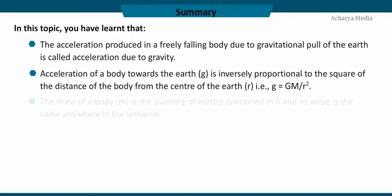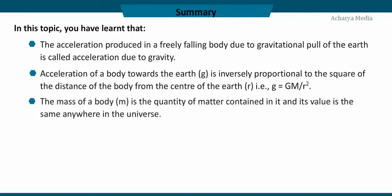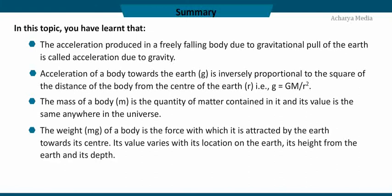The mass m of a body is the quantity of matter contained in it, and its value is the same anywhere in the universe. The weight mg of a body is the force with which it is attracted by the earth towards its center; its value varies with location on the earth, height from the earth, and depth.